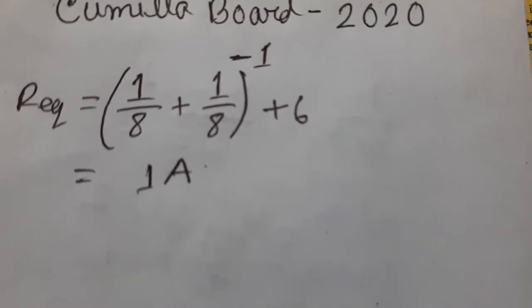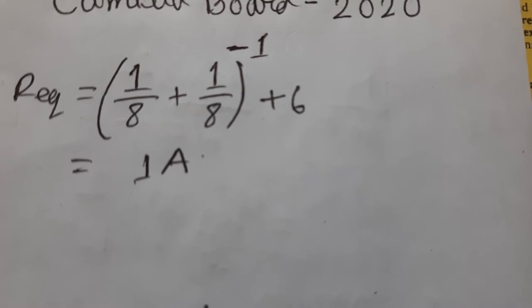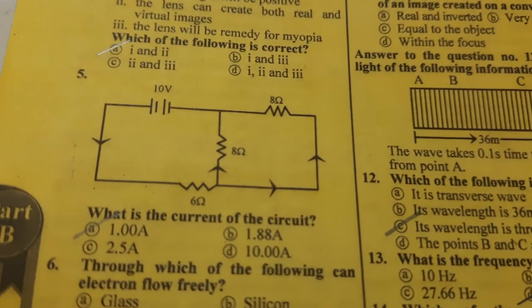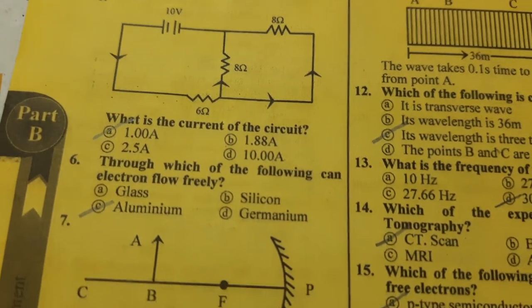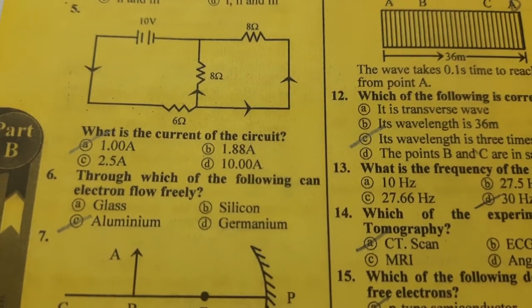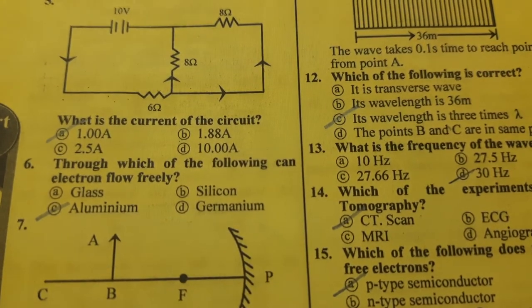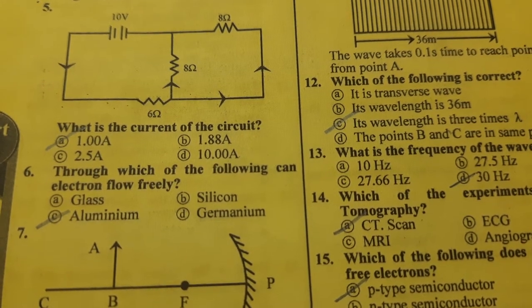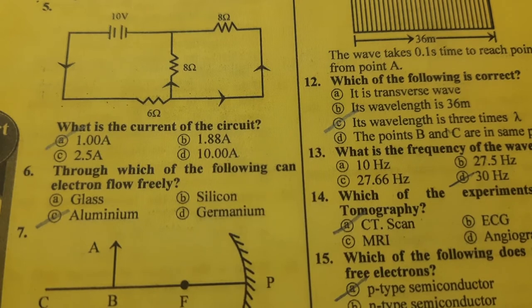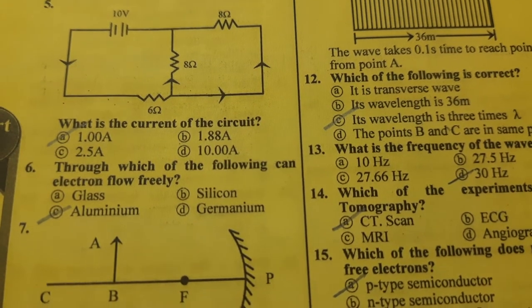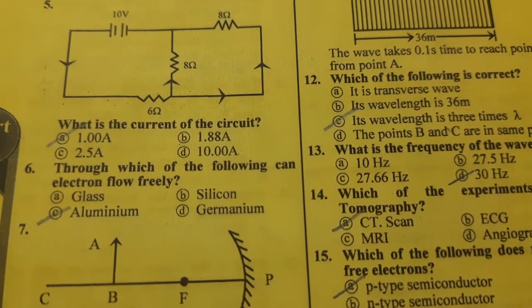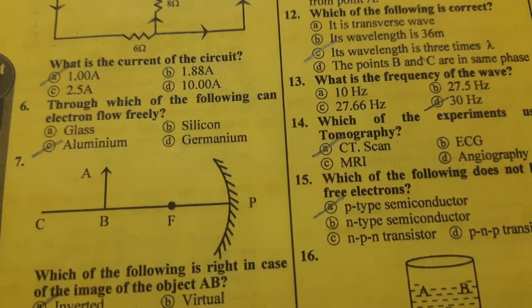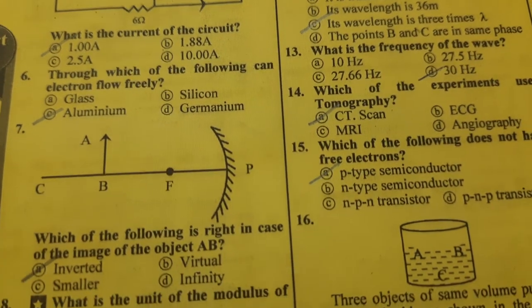The explanation is: equivalent equals (1/8 + 1/8)⁻¹ plus 6, giving one ampere. Question number six: through which of the following can electrons flow freely? The best option is option C — aluminium.